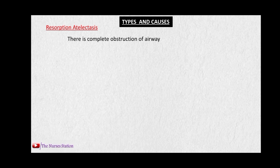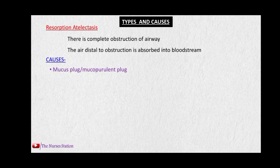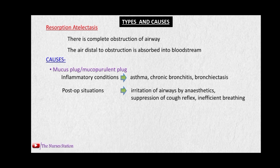Whenever there is complete obstruction of the airway, the air distal to that obstruction is absorbed into the bloodstream, the air spaces become deflated, and produce atelectasis. The causes include a mucous plug or mucopurulent plug which may block the airways. This may be caused by inflammatory conditions like asthma, chronic bronchitis, or bronchiectasis, or post-operative situations like irritation of airways by anesthetics, suppression of cough reflex, or inefficient breathing.